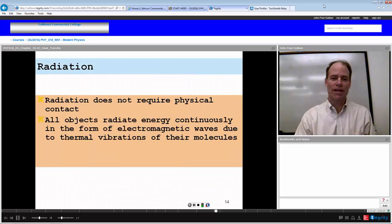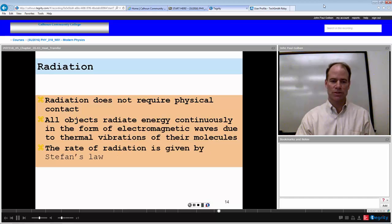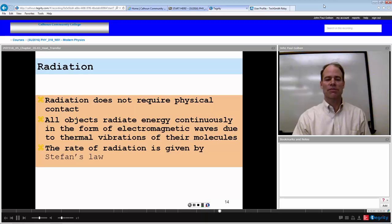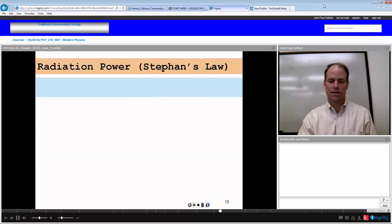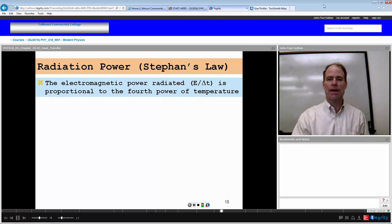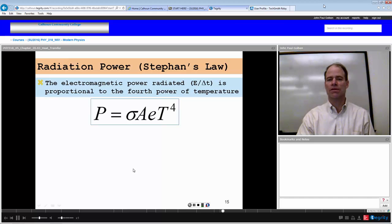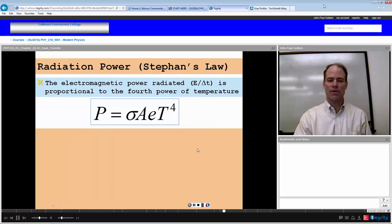Radiation. Radiation does not require any kind of physical contact. All objects radiate energy continuously by electromagnetic waves due to the thermal vibrations of their molecules, and that's due to temperature itself. The rate of radiation is given by Stefan's law. Here is the electromagnetic power, radiated energy per time by Stefan's law, and it's proportional to the fourth power of the temperature. Power is equal to sigma A E T to the fourth power. Stefan's law.